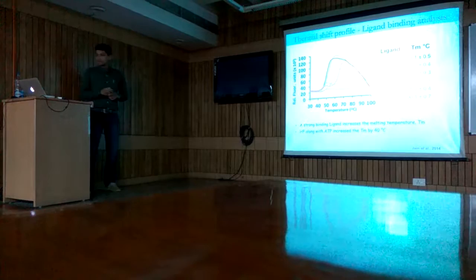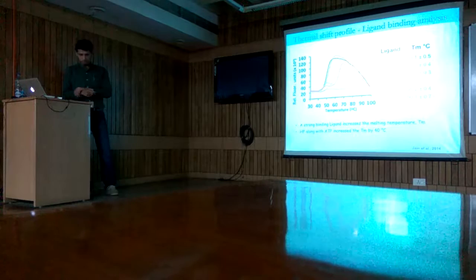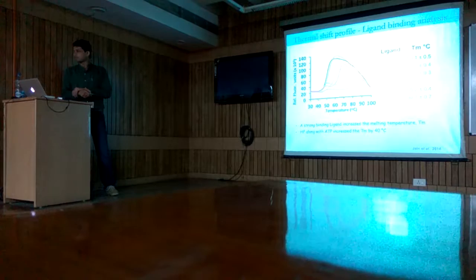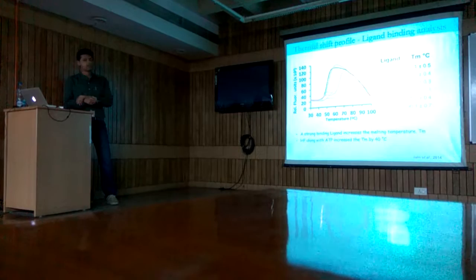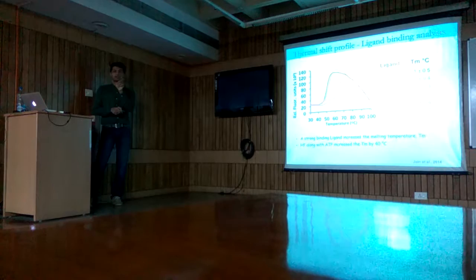Next, to evaluate the ligand binding, we performed thermal shift assays. In this assay we used the substrates ATP, proline, and the ligand HF. In a thermal shift assay we observed a melting temperature, Tm, of apoprotein—the native protein shown here in black—at around 50 degrees. A Tm of 50 degrees means at this temperature the ratio of the folded and unfolded protein is 1.